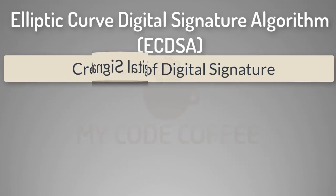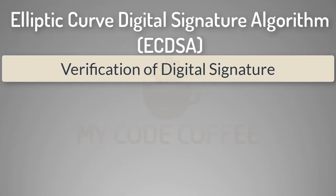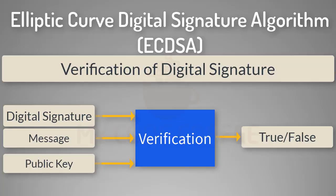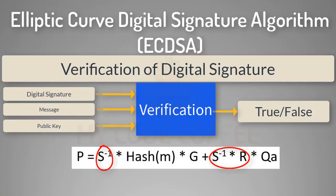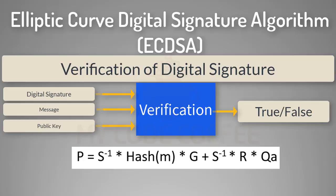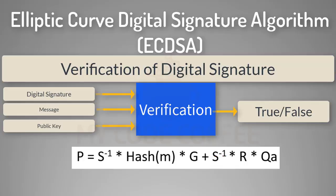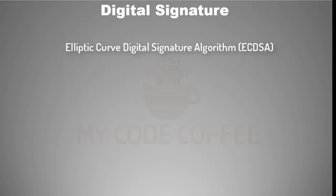Now let us discuss the verification part of ECDSA. Verification means ensuring that the digital signature was created by the same private key used to create the public key being used for verification. Mathematically, you solve the equation to get the point P, where P is the temporary public key created while generating the digital signature. r and s are the digital signature values, Qa is the public key of the signer, and m is the transaction data. Since the verifier doesn't have the temporary public key but knows r as its x-coordinate, if the x-coordinate of P equals r, verification is successful.